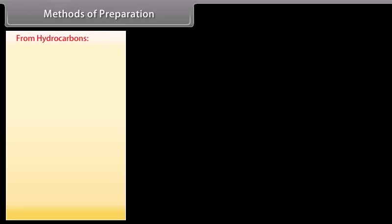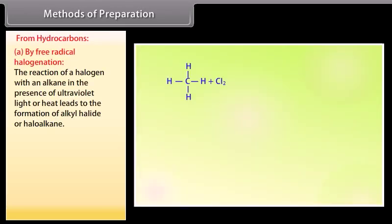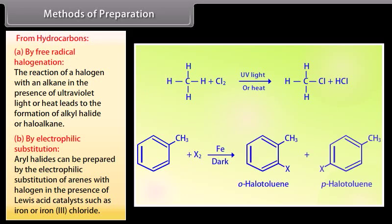Methods of Preparation. From Hydrocarbons. By free radical halogenation: The reaction of a halogen with an alkane in the presence of ultraviolet light or heat leads to the formation of alkyl halide or haloalkane. By Electrophilic Substitution: Aryl halides can be prepared by the electrophilic substitution of arenes with halogen in the presence of Lewis acid catalysts such as iron or iron-3-chloride.